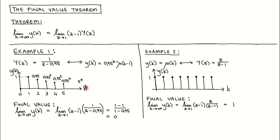We now use the final value theorem to arrive at the same answer. The final value theorem says that the steady state value of signal y is the limit as Z goes to 1 of Z minus 1 times 1 divided by Z minus 0.95. When we apply the limit to the numerator and denominator, we get 1 minus 1 divided by 1 minus 0.95, which is zero as expected.